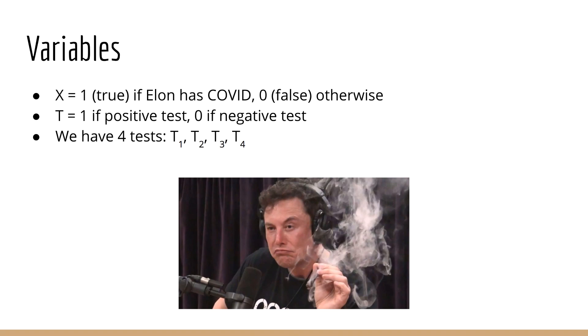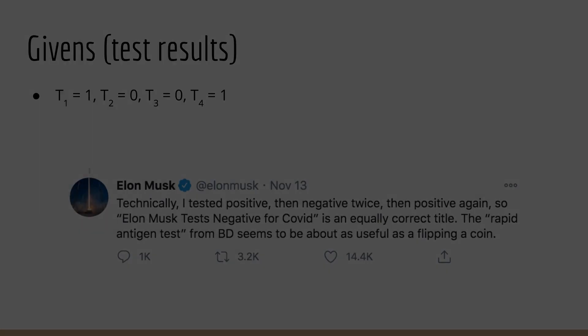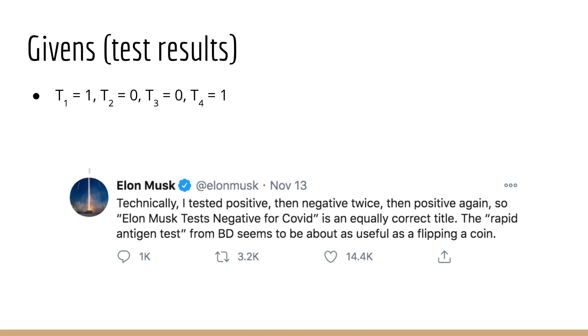Okay, so that's easy enough. We've just defined some variables. Next, let's think about what we are given, and what we want to find. Obviously, we know the results of Elon Musk's test, which is the reason for this controversy in the first place. As per his Twitter account, the first test was positive, the next two were negative, and the fourth was positive.